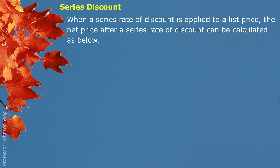Sometimes we may experience a series discount. When a series rate of discount is applied to a list price, the net price after a series rate of discount can be calculated using the expression below. The net price comes from a list price multiplied by a series net price factor. Series discount happens all the time — when you go to a store, you may experience a seasonal sale or holiday sale, and at the same time you may have a credit card or membership that entitles you to additional discount. That's the situation of a series discount: that's how we figure out the net price from the list price and the series discount.